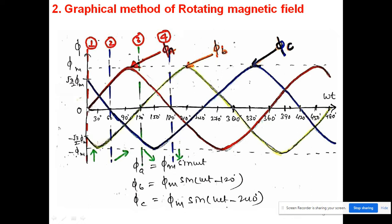First we draw phi_a: it starts from zero, reaches maximum at 90°, returns to zero at 180°, goes to minimum, and completes one cycle at 360°. Then we draw phi_b, which is behind by 120°, so it starts from 120°, goes to maximum, then minimum, in the same sinusoidal manner. At 90° its value comes from the sine function, and at specific points the values are ±√3/2 * phi_max.